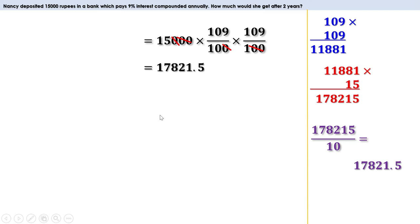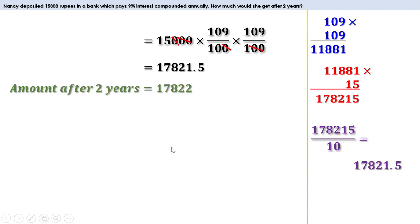17,821.5 means 17,821 rupees and 50 paise. When there is 50 paise or more, we get 17,822 rupees; if less than 50 paise, only 17,821 rupees. So the amount after 2 years is 17,822 rupees. Now let us do the problems on page 92.